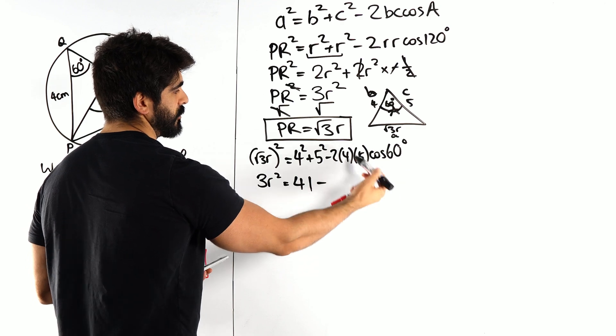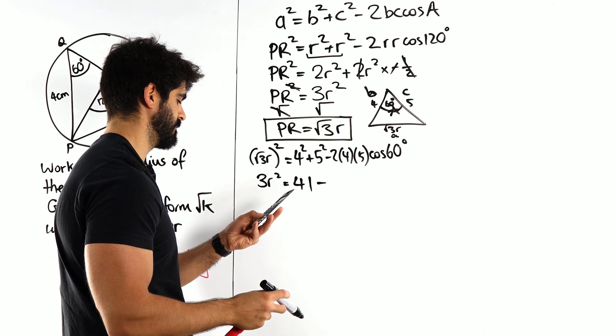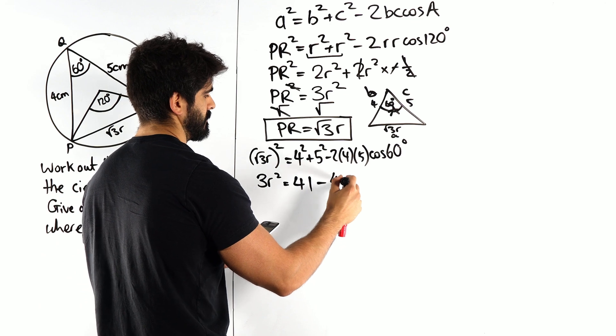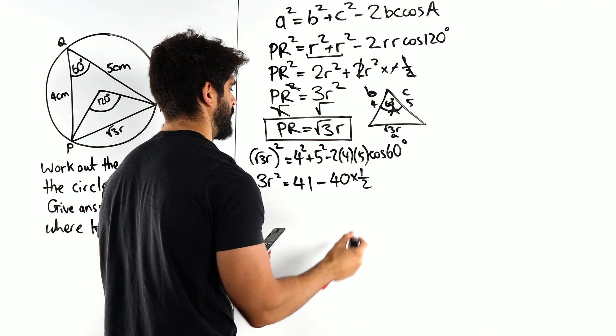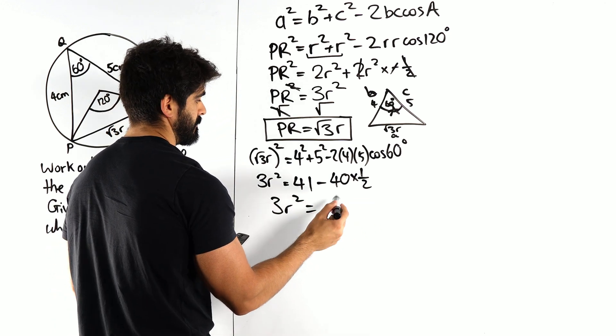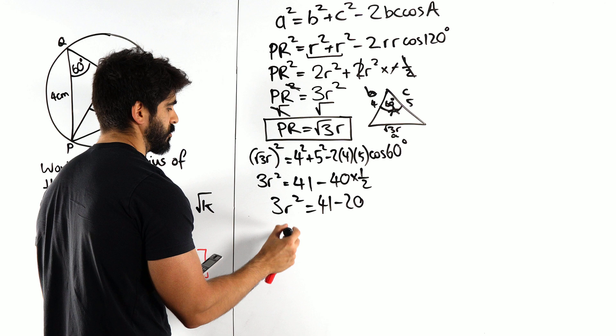Now cos 60 is a half, that would cancel the 2. A lot of students wouldn't write it just yet, so I won't either. So this here is 40 times a half, which is 20. So 41 minus 20, we get 21.